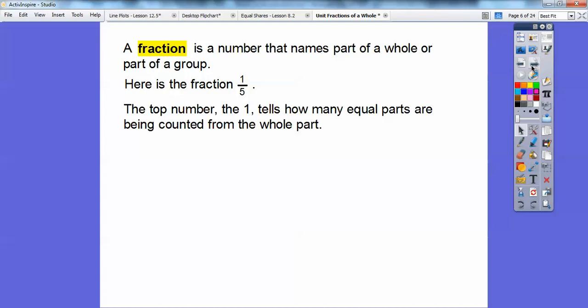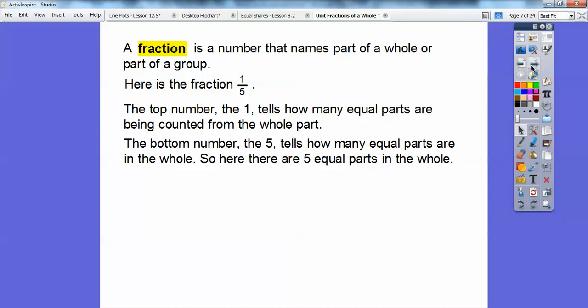The top number, which is the 1 here, tells us how many equal parts are being counted from the whole part. If you don't know what that means yet, I'll explain it with a couple of examples here.